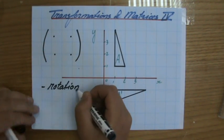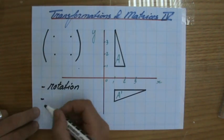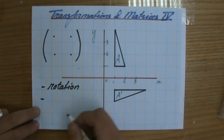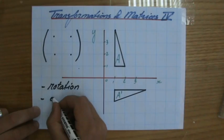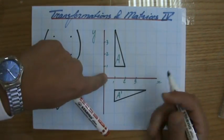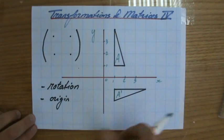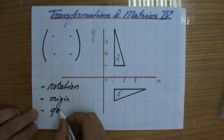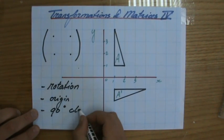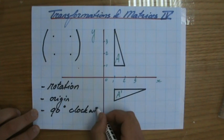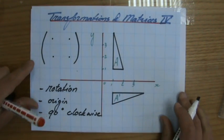So to find the matrix I need to find the transformation used. It's a rotation about the origin. That's the center and it is 90 degrees clockwise. So that is the transformation used.